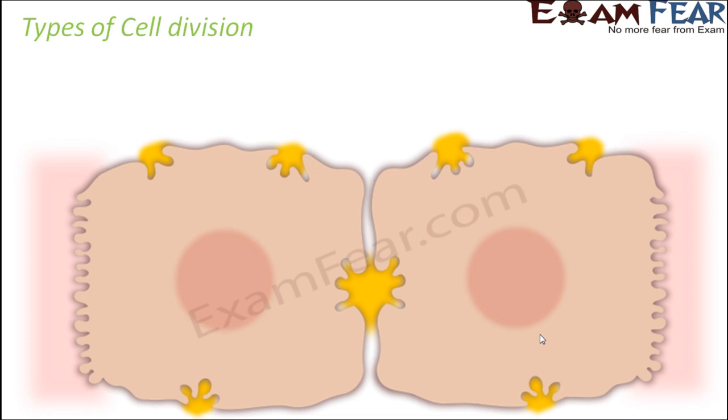Now, when we talk about cell division, there are different types of cell division for different types of organisms. For example, for prokaryotes, you have different types of cell division.